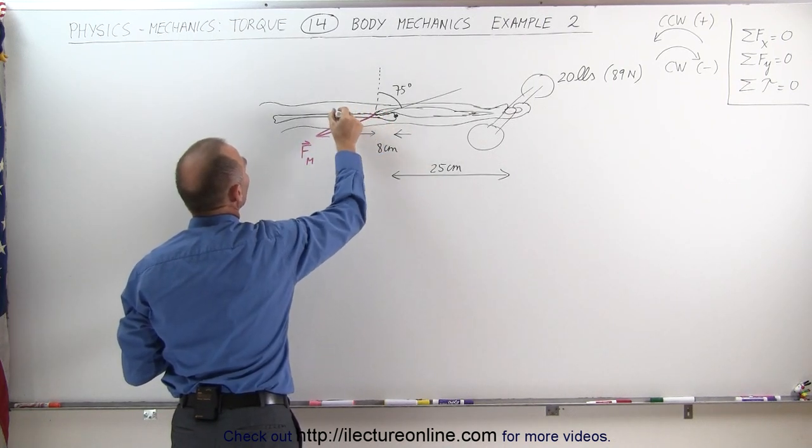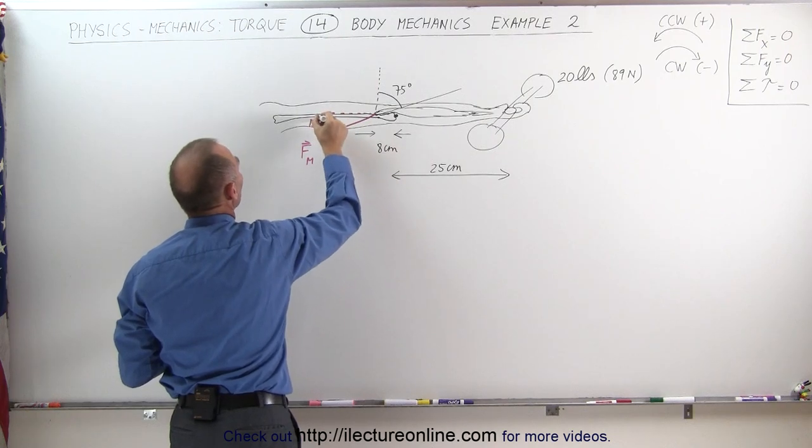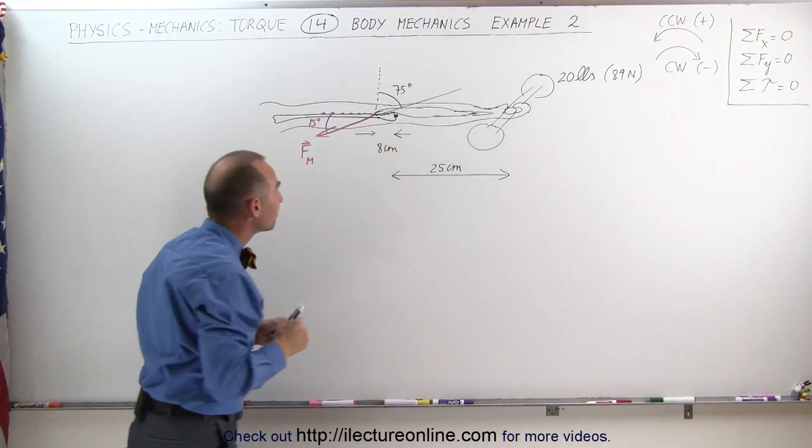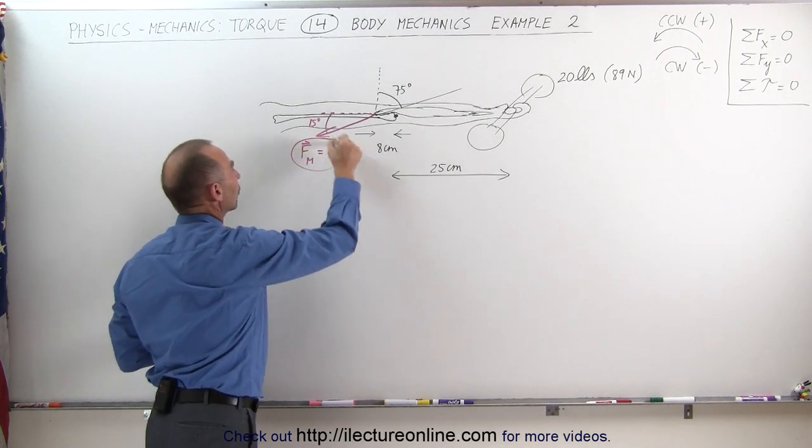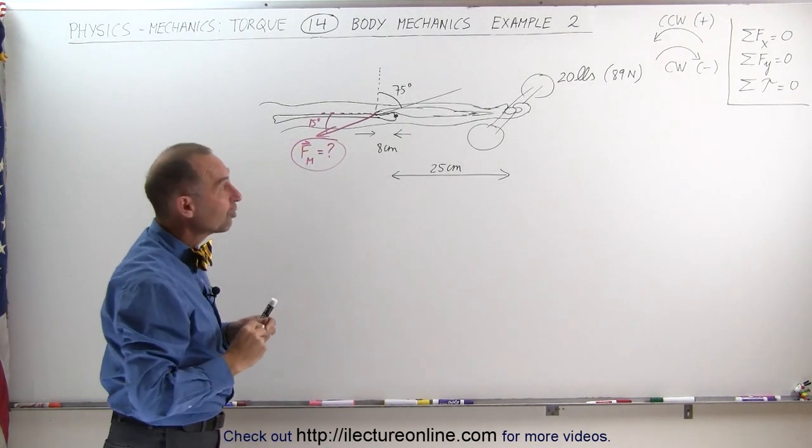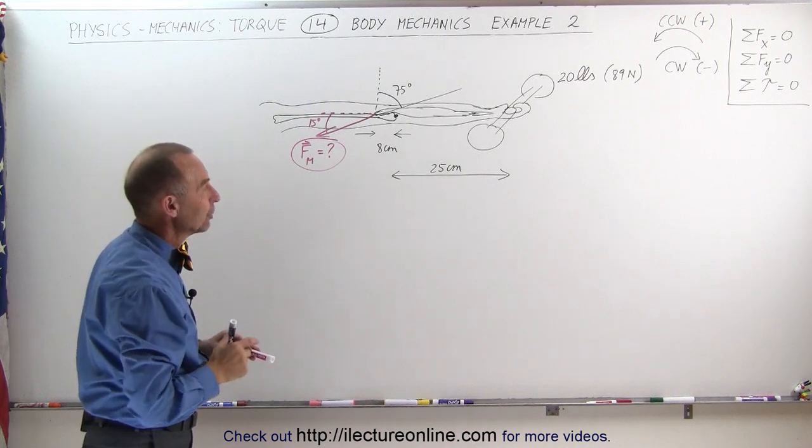It's in this direction, which makes an angle of 15 degrees with the horizontal. That is what we're trying to find - the strength or force required by that muscle. Notice that 20 pounds is roughly 89 newtons.